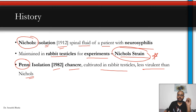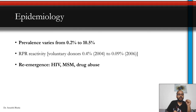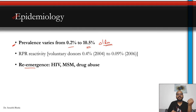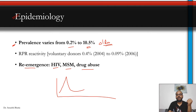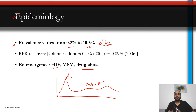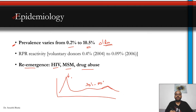The Nichols strain is maintained in rabbit testicles for experiments. For epidemiology, the prevalence varies from 0.2 to 10.5%, though these are older data. The prevalence is increasing because of concomitant HIV positivity, MSM exposure, and drug abuse. Initially prevalence was high before penicillin; it dropped drastically after penicillin's introduction, then increased again around the 1970s–80s with the HIV epidemic, and there are now endemic spikes due to retroviral infection, MSM exposure, drug abuse, and lack of public health measures.